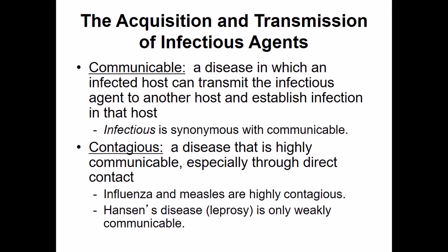A contagious disease is one that's very communicable. The distinction between communicable and contagious is kind of a fine line — it's more of a gradient or a spectrum. If it's difficult to spread from host to host, we'd say it's communicable. If it easily spreads from host to host, it's contagious. Influenza and measles are highly contagious, while leprosy, also known as Hansen's disease, is very weakly communicable — not as contagious.